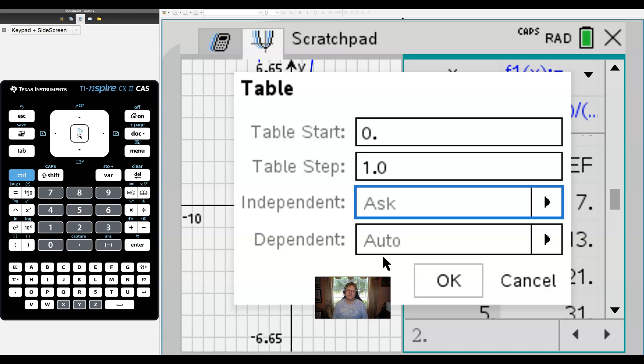We only need to change the independent from Auto to Ask. Basically, that's going to allow the calculator to ask us what we want. Therefore, we can enter them. And then the dependent variable is on Auto, which means the calculator is going to do the work for us.